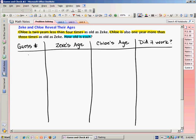Now there is a bit of a hard part of this problem, and that's we don't know if Zeke and Chloe are kids or if they're adults. So when we make our first guess, it's just kind of a shot in the dark. Let's go ahead and guess that Zeke is 10 years old. If Zeke is 10, according to the first clue that says Chloe is 2 years less than 4 times that age, I need to do 10 times 4, which is 40, and then subtract 2. That would mean Chloe is 38.